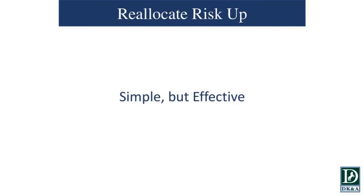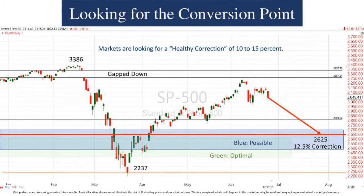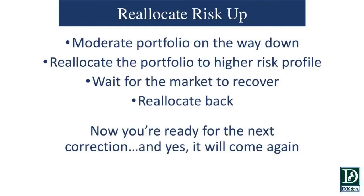It's simple but effective. When looking at the markets and a 10 to 15 percent healthy correction, we're going to use — just like we did last week — a 12.5 percent correction in this scenario. So how does this play out for our clients in reallocating risk up?